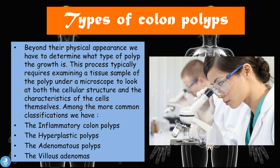There are many different types of colon polyps. Beyond their physical appearance, we have to determine what type of polyp the growth is. This process typically requires examining a tissue sample under a microscope to look at both the cellular structure and the characteristics of the cells themselves. Among the more common classifications we have inflammatory colon polyps, hyperplastic polyps, adenomatous polyps, and villus adenomas.